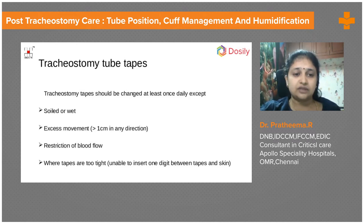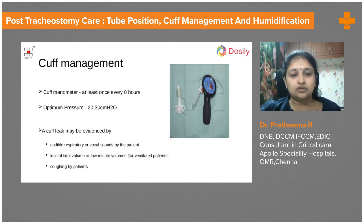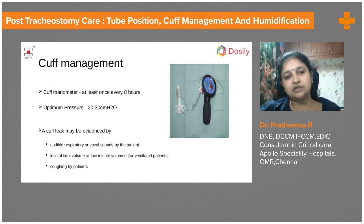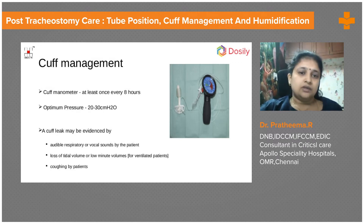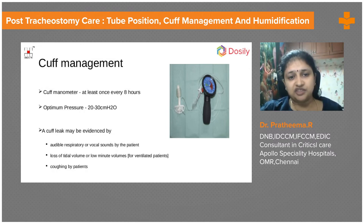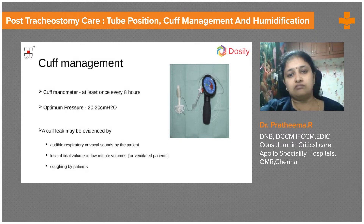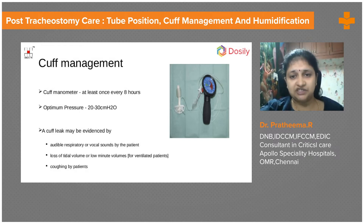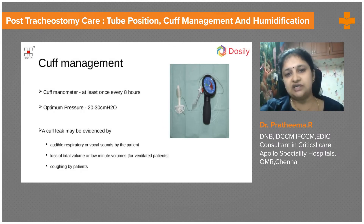Cuff management is a very important aspect. We have already covered low-pressure high-volume cuffs, why tracheal necrosis happens, and how much pressure is needed. The cuff manometer is used for checking pressure just as we do with ET tubes. Optimum cuff pressure is 20 to 30 cmH₂O — you can see the green range on the manometer indicating adequate pressure. We must check and adjust to stay within this range.